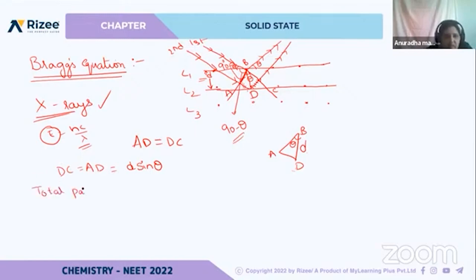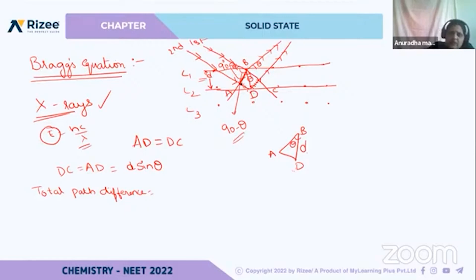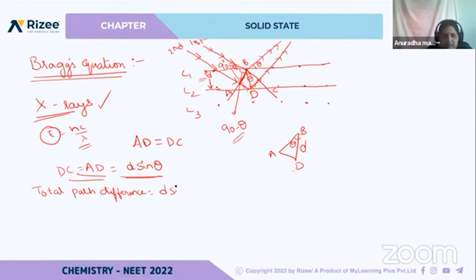The total extra path that the second ray traveled compared to the first ray is AD plus DC. Since both equal D sin theta, the total path difference equals D sin theta plus D sin theta, which gives us 2D sin theta.